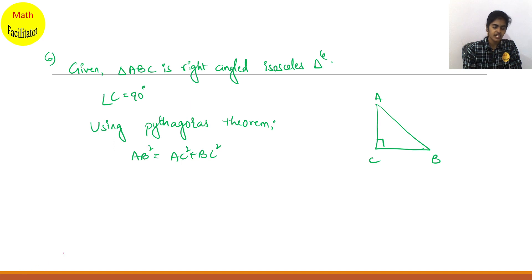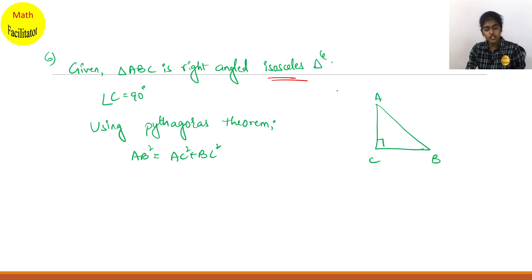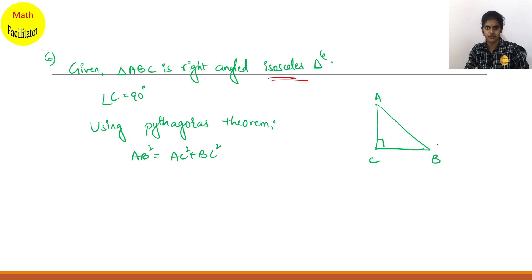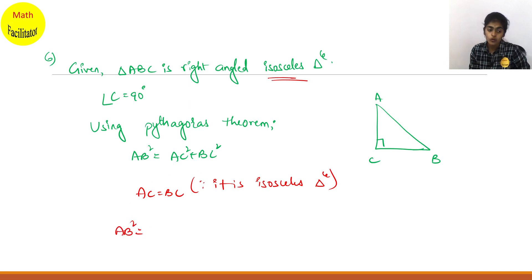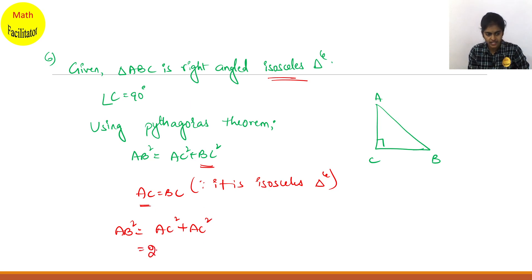This is given as a right angle isosceles triangle. In an isosceles triangle, two sides are equal. AB is the hypotenuse, and hypotenuse is always the longest side. So the other remaining two sides are AC and BC. AC equals BC since it is an isosceles triangle. So substitute AC equals BC: AB square equals AC square plus AC square, which gives AB square equals two AC square.